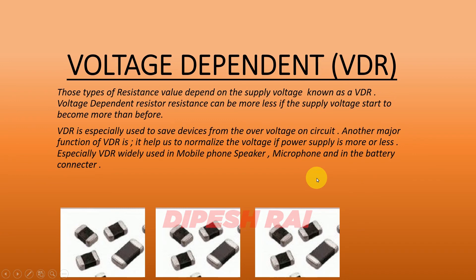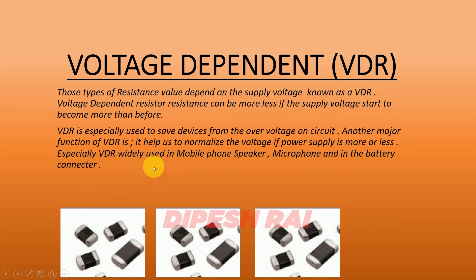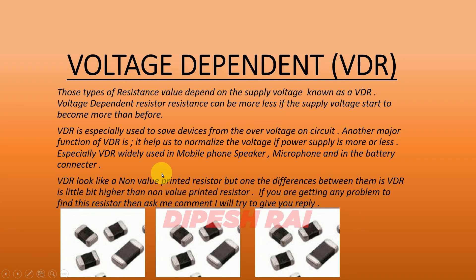VDR is especially used to save devices from overvoltage in a circuit. Another major function of VDR is it helps to normalize the voltage if the power supply is more or less. VDR is widely used in mobile phone speakers, microphones, and battery connectors — you can especially find the VDR in the battery connector circuit. Now, one difference between VDR and non-value printed resistor is that VDR is slightly higher in size than the non-value printed resistor.